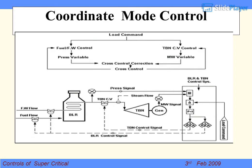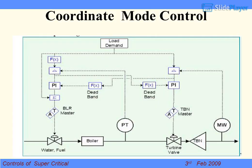Coordinate Mode Control: whenever load is increased, the command is given to increase fuel flow and feed water flow both, and load is increased at the same time to meet demand. Load following will be fast and throttle pressure will not drop. In supercritical units we follow this mode for fast load pickup. This is how CI units generally run. Many logic bits are based on unit capability and auxiliary availability.